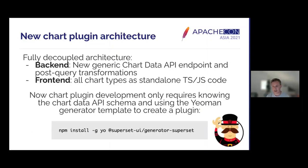The decision was then to build a new chart plugin architecture. The idea was to add a new chart data endpoint to the backend that was totally generic and didn't know about the context in which the chart was going to use the data. It required making a very specific data request, and based on that it could fetch data from the analytical database and do any necessary transformations.